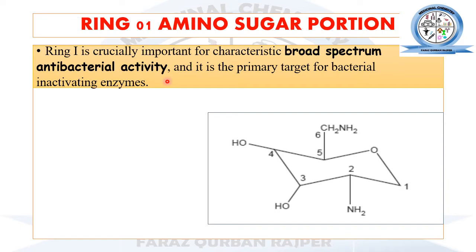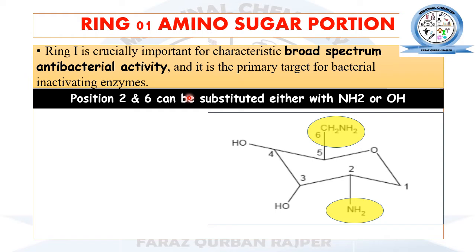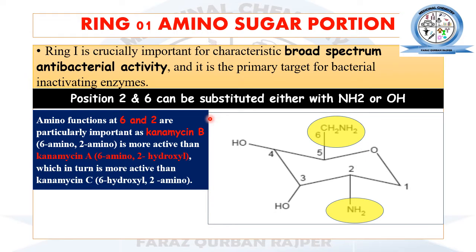Now let's discuss the different modifications that can take place in the three different rings of the aminoglycosides. The chemical structure can be divided into three rings: two amino sugar rings and one centrally placed hexose ring. The ring one amino sugar portion is important for broad spectrum antibacterial activity and is therefore a target for bacterial inactivating enzymes. At positions two and six of this ring, substitution can be either with amino or hydroxyl functional groups, but the amino function has more importance and is responsible for better antibacterial activity.